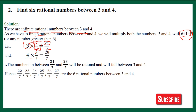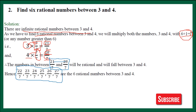Similarly, I have multiplied and divided 4 by 7 upon 7 as well. The numerator 4 times 7 gives 28, and the denominator is 7. So now our fractions are 21 upon 7 and 28 upon 7. We can write 3 as 21 upon 7 and 4 as 28 upon 7. Now finding rational numbers between them is very easy. All numbers between 21 and 28 can be written in the numerator. So 22 upon 7, 23 upon 7, 24 upon 7, 25 upon 7, 26 upon 7, and 27 upon 7 are the 6 rational numbers between 3 and 4. I hope you understood.